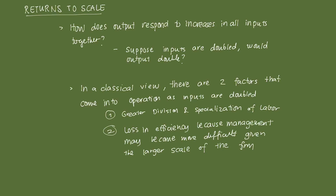So what is returns to scale? Before we get to that, we sometimes have to ask how does output increase over time? The way that you increase output is essentially you can opt to increase inputs in some manner. So the first question we pose is: how does output respond to changes in all inputs together? For example, picture this — say you doubled the amount of labor and capital that you use, what would happen to output?